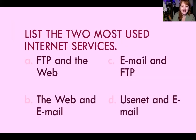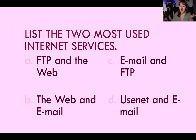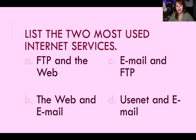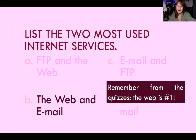What are the two most used internet services? From the quiz study guide, the web is the most popular internet service, so it has to be one of the answers that includes the web. We have the web and email, or the web and FTP. FTP is file transfer protocol — that's not the most popular. It's email. So the web is number one and email is second. Keep in mind that the web and the internet are not synonyms — the internet is the connection and infrastructure, while the web is the websites you look at.